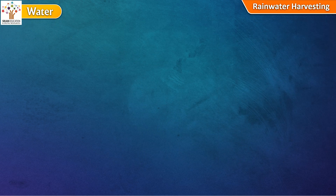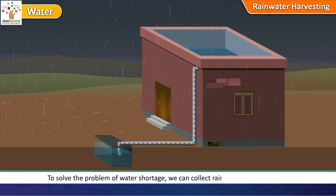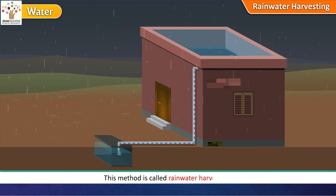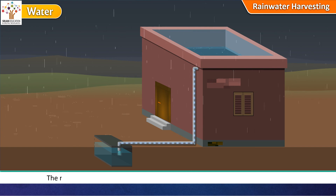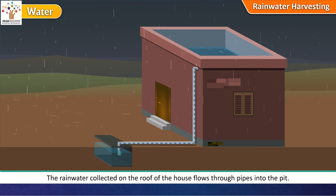Rainwater harvesting. To solve the problem of water shortage, we can collect rainwater and use it later. This method is called rainwater harvesting. A pit is dug in the courtyard. The rainwater collected on the roof of the house flows through pipes into the pit.